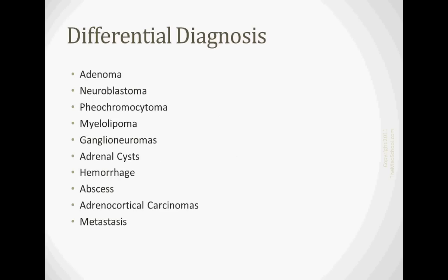So on your differential diagnosis, adenoma is the most common, which is a benign tumor, but it can cause symptoms that we've talked about depending on where they originate. Neuroblastoma you see in children, pheochromocytoma we mentioned, myelolipoma, ganglion neuromas, adrenal cysts, hemorrhage and abscess. You're going to more likely see the hemorrhage and abscess if there has been a previous surgery where we got maybe some infection in there, or maybe you can have a trauma as well. Adrenal cortical carcinomas are the ones we worry about being malignant, and you can get metastasis to the adrenal glands from other areas.